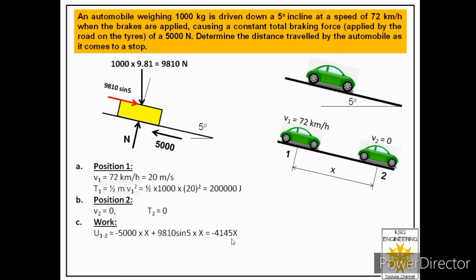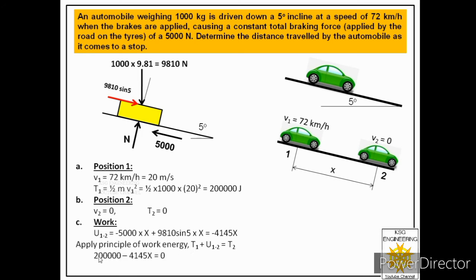Applying the work-energy principle: initial kinetic energy plus work done equals final kinetic energy. Substituting the values: 200,000 − 4145x = 0, since the final kinetic energy is zero. Solving for x gives x = 48.25 meters.